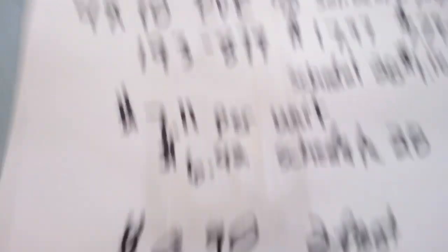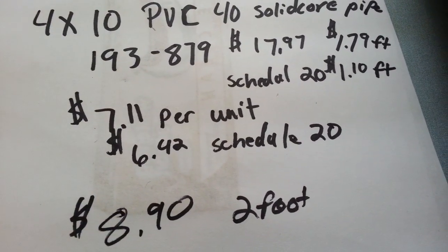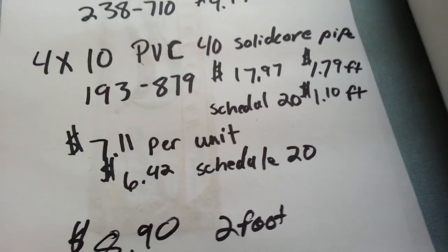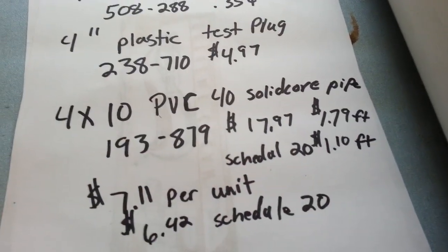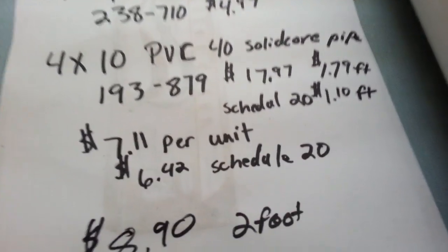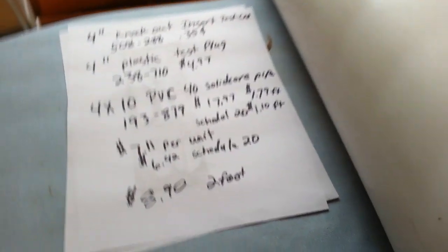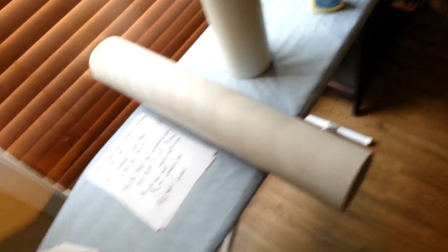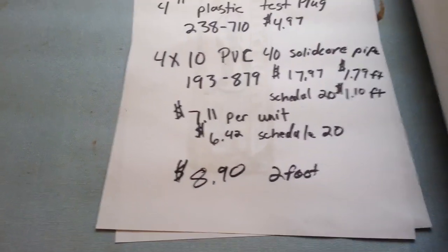So if you wanted to go with the schedule 20 option, which remember is the pliable pipe, it would be $6.42 per unit because you would get the top two units just like we showed you. The 4 by 10 PVC at schedule 20 would be $8.42. Now if you wanted to do a 2-foot survival cache like this one here, that one would be $8.90 for the 8-foot survival cache.